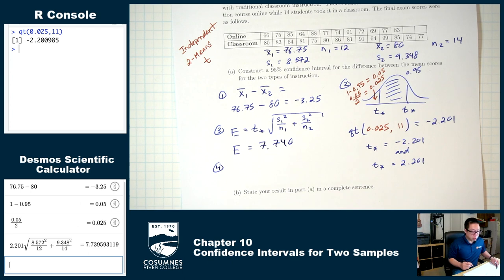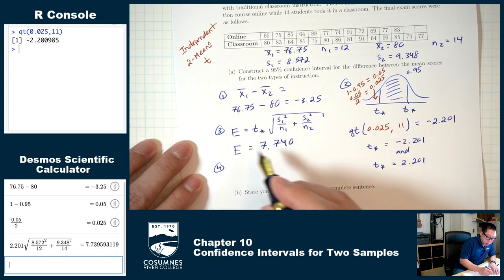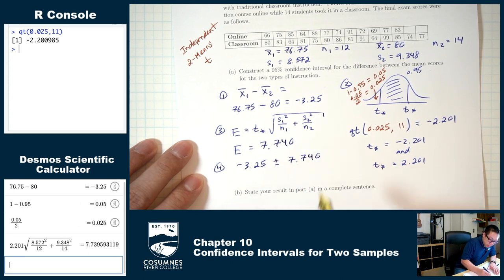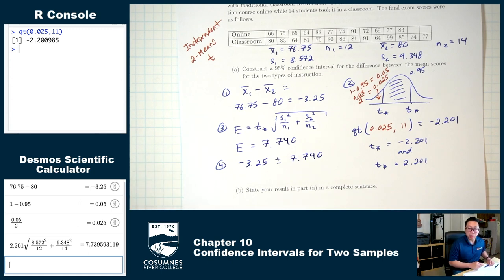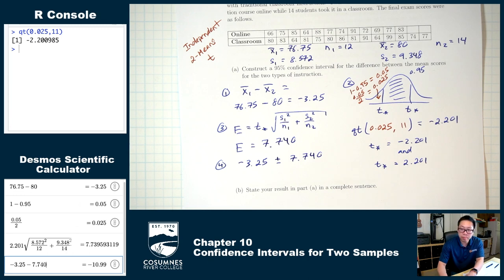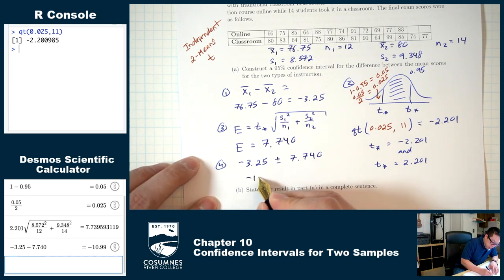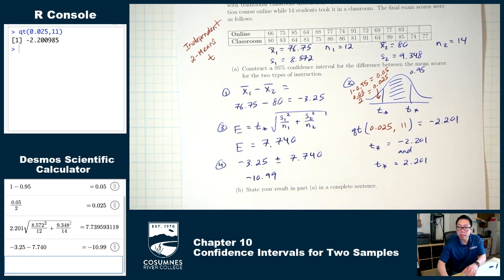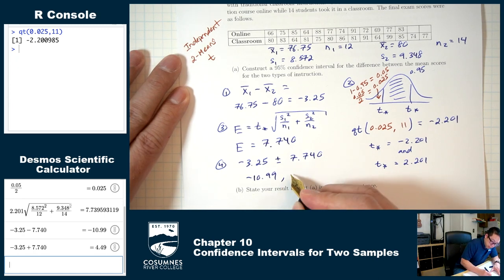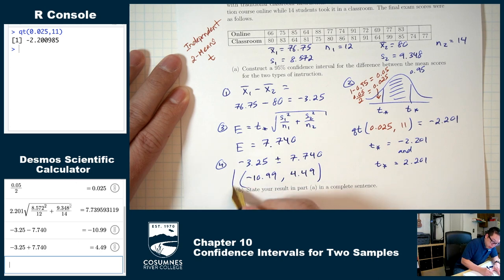Step four: construct your interval. Start with x-1-bar minus x-2-bar, which is negative 3.25, plus or minus the margin of error, 7.740. The low number is negative 3.25 minus 7.740, which is negative 10.99. The high number is negative 3.25 plus 7.740, which is 4.49. That's our confidence interval: (negative 10.99, 4.49).